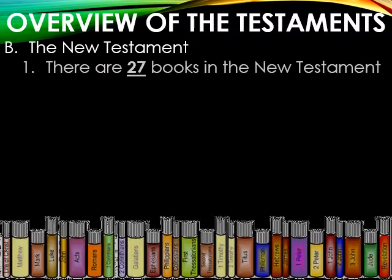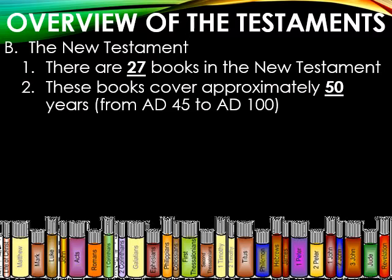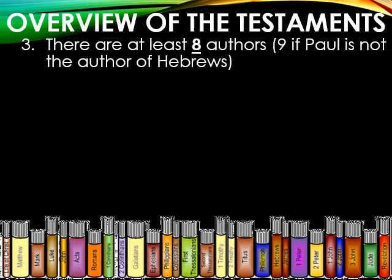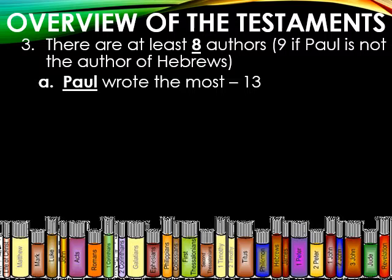The New Testament is made up of 27 books, covering approximately 50 years — whereas the Old Testament covered over 1,000 years of Hebrew history. There are at least eight authors, nine if Paul is not the author of Hebrews, and there is a lot of debate over that. Paul wrote the most — 13 epistles or letters, 14 if he wrote Hebrews. John wrote five: the Gospel of John, 1st, 2nd, 3rd John, and the Book of Revelation.